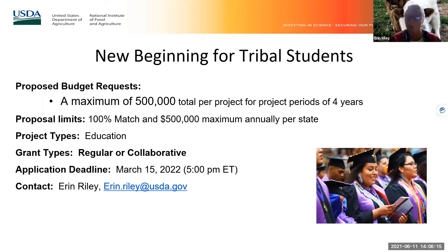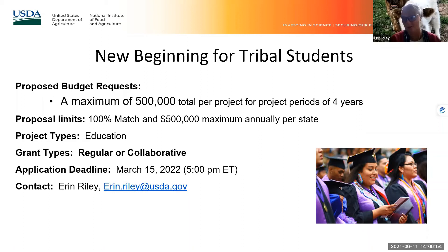There is a 100% non-federal match required. The maximum a state can receive per year is $500,000. There are regular and collaborative grant types. The next application deadline is March 15, 2022. These two tribal education programs are eligible to 1994 land grants and land grant colleges. The tribal programs in this portfolio are not used towards tribal individuals directly but toward land grant institutions.